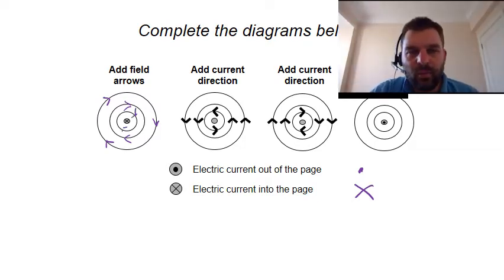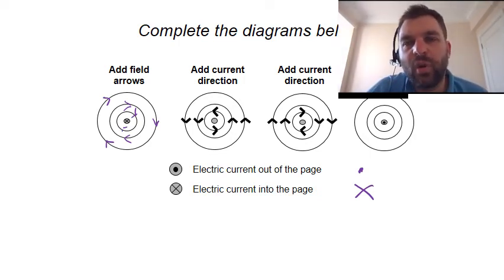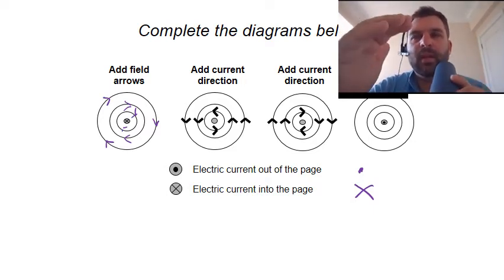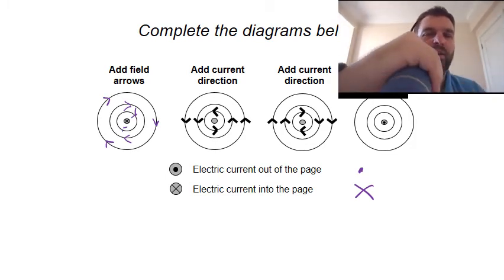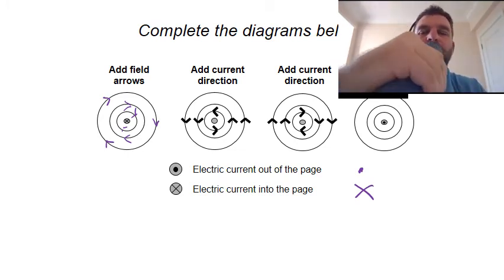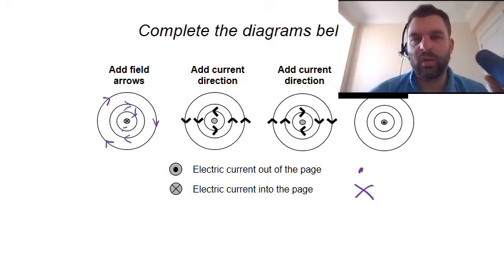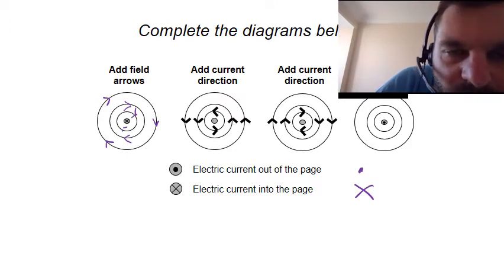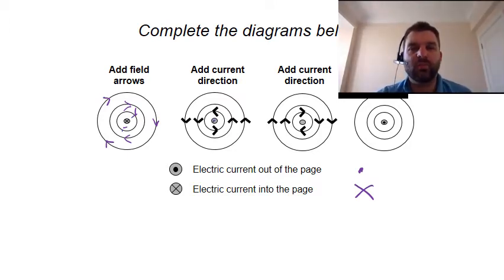For the second example, we know the direction of the magnetic field this time, but we don't know the direction of the current. The magnetic field is going anti-clockwise, so it means that the current must be going towards you, not away. So we put in a dot — it's out of the page, coming towards you.